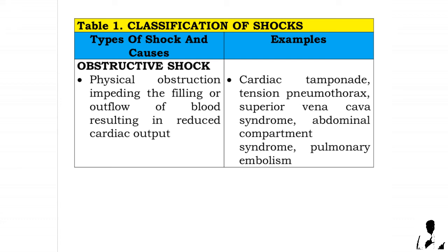Obstructive shock develops due to physical obstruction impeding the filling or outflow of blood, resulting in reduced cardiac output. Examples include cardiac tamponade, tension pneumothorax, superior vena cava syndrome, abdominal compartment syndrome, and pulmonary embolism.